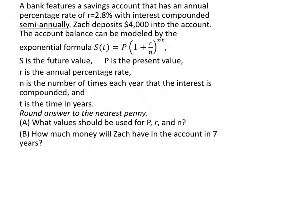The nice thing about this formula is it tells us what each of the unknowns is. S is the future value, P is the present value, R is the annual percentage rate, N is the number of times each year that it's compounded, and T is the time in years. When we find our answers, we'll round to the nearest penny.